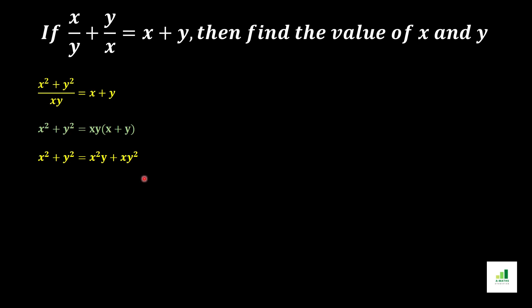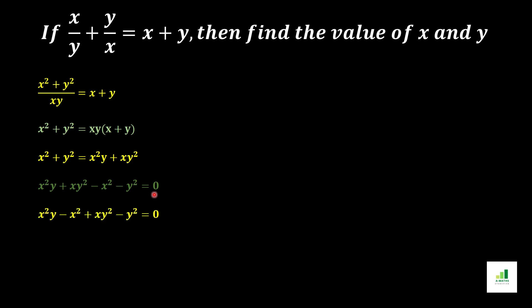In the next step, these two values go to the other side of the equation and convert to negative signs. So x squared y plus xy squared becomes negative — minus x squared y minus xy squared — and then x squared and y squared move over as minus x squared and minus y squared, equal to zero.